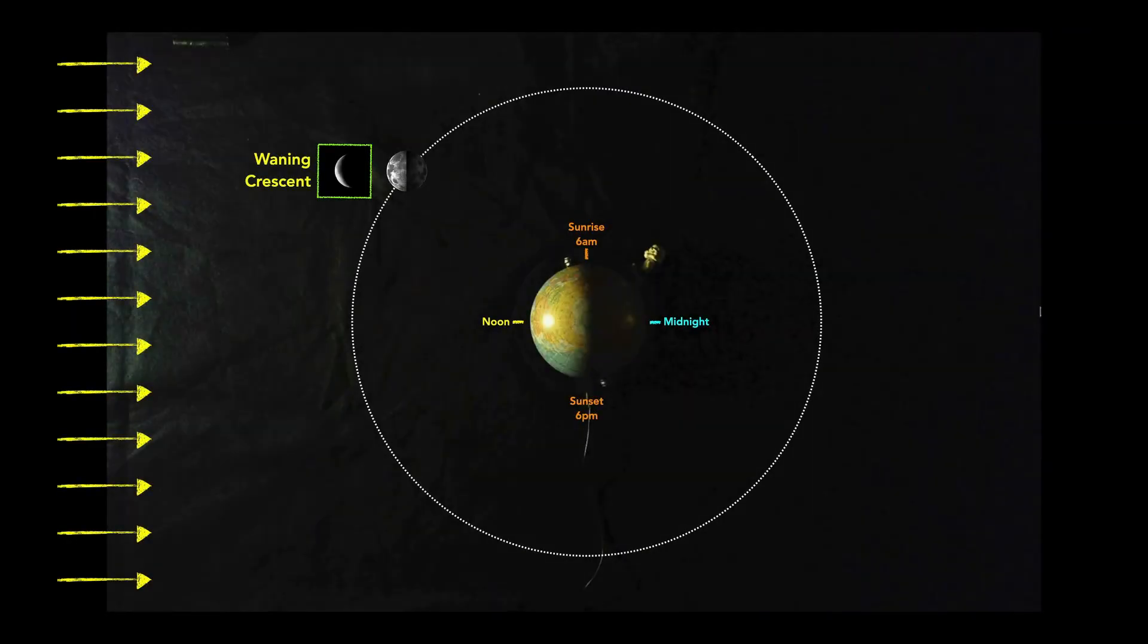Well, let's take a look at another phase. So we'll switch over to our waning crescent moon. And we'll skip the animations here. We have our observer right there at the 3 a.m. point. And they would be looking to the east to see that moon. And so a waning crescent moon would rise at 3 a.m.